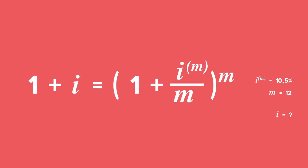Use the formula: 1 + i equals (1 + i^(m)/m) raised to the power m, to find the annual effective interest rate i.